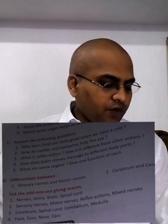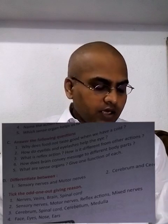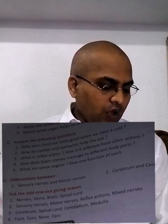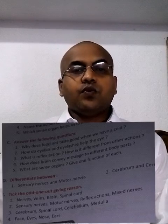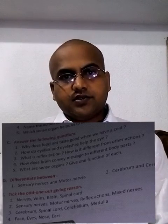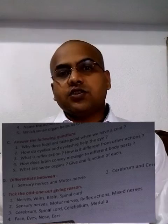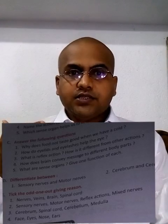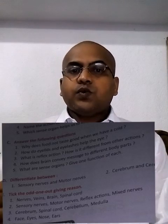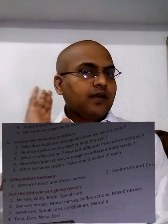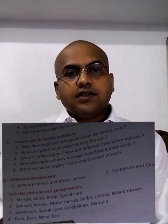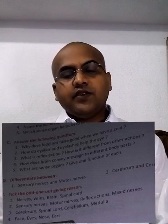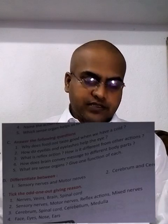The next question: what are sense organs? Give one function of each. The organs which help us to know about the outside world around us are called sense organs. We have five sense organs: eyes, which help us to see different things; nose, which helps us to smell; ears, which help us to hear; tongue, which helps us to taste; and skin, which helps us to feel different sensations.